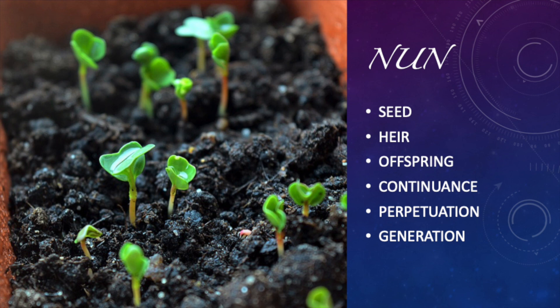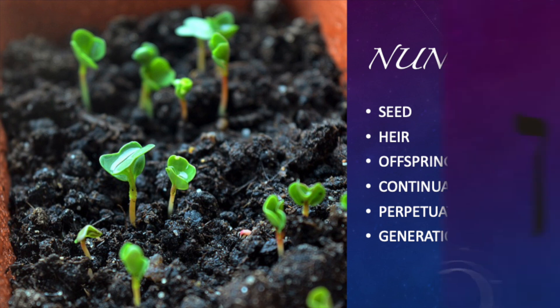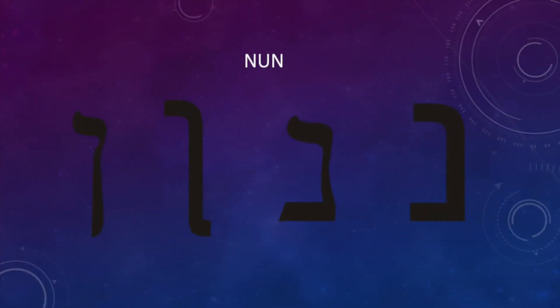It's our job and responsibility to take care of that heir and that offspring. This all has to do with culture and agriculture. Here's what the letter Nun looks like. Thank you again for your time — stick with me on this series so you can learn more and more about the Torah. Shalom.